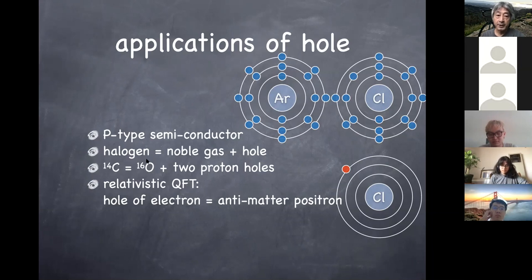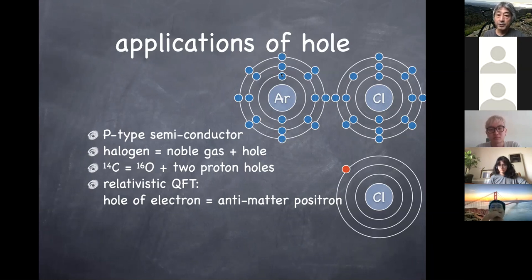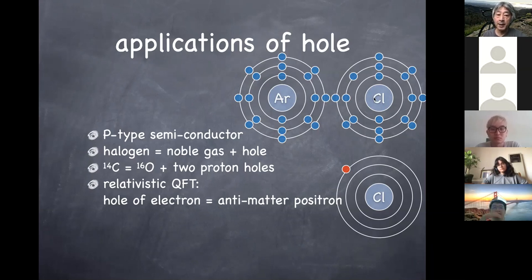Another example is the halogen — the seventh group in the periodic table. Argon is a noble gas in the third row: 1s states with two electrons, 2s and 2p states with eight electrons, and 3s and 3p states with eight electrons again. Chlorine, one of the halogen elements, has one electron missing compared to argon, which is why it's chemically very active. Chlorine can easily become a negative ion by acquiring an electron to complete the closed shell.